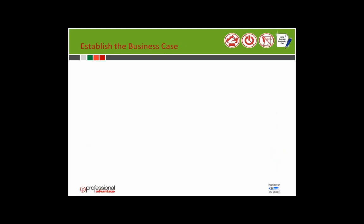Establishing the business case still seems to be the hard point — the roadblock — for most organisations. Tips for doing so: first, review current capability. Second, align with business strategies and objectives. If your organisation has a goal to be the most reliable supplier in your industry, yet your disaster recovery plan doesn't exist and you may be offline for three or four days to recover, all that strategy, planning, and marketing goes out the window — people will not trust that you can deliver anymore.